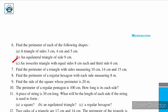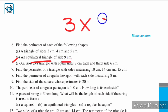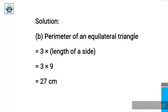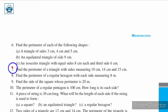Part b: an equilateral triangle of side 9 centimeter. For an equilateral triangle, the formula for perimeter is 3 into the length of one side. Here the length of one side is 9 centimeter, so perimeter equals 3 into 9 centimeter, which is equal to 27 centimeter.